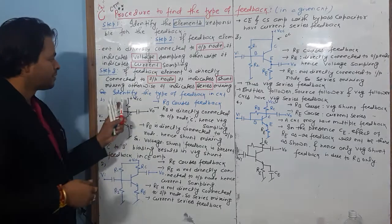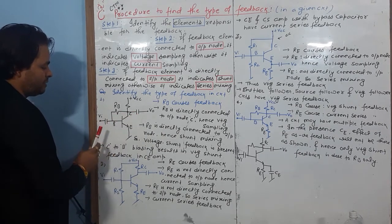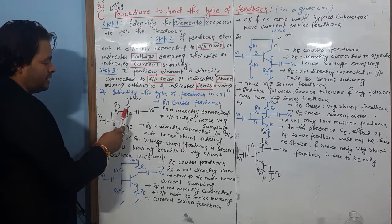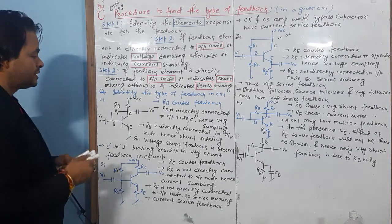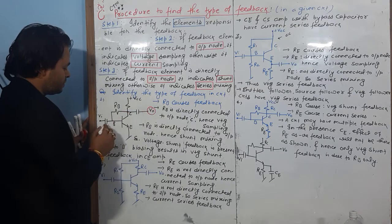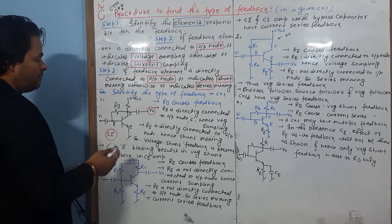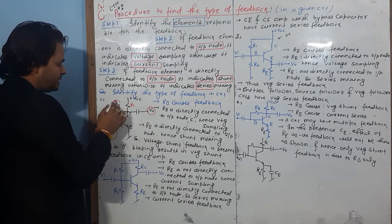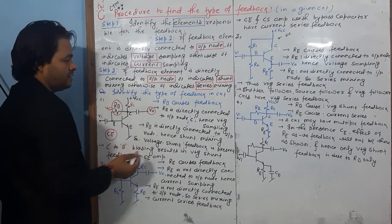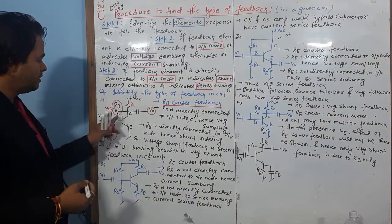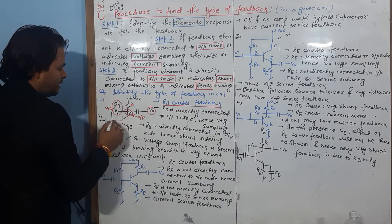Now, identify the type of feedback in this circuit. The biasing element here is Rb. Identify that Rb causes the feedback. Rb is directly connected to the output node — this is the output node — and this is the input node.